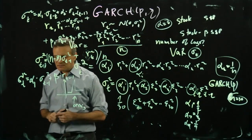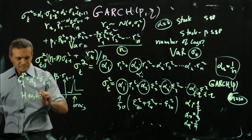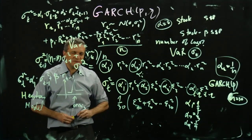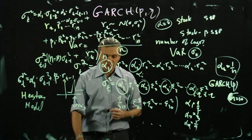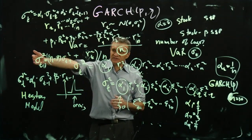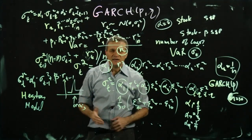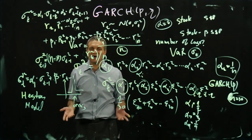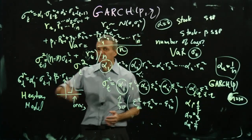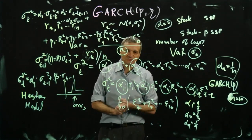There are also other interesting volatility models, such as the Heston model, which is used in options pricing rather than risk management. The options market gives you forward-looking volatility, so another idea is to estimate volatility for a portfolio of stocks based on the options market rather than using GARCH models.